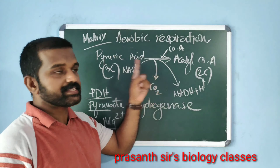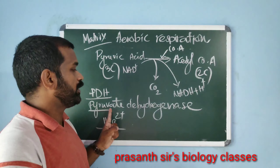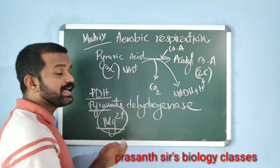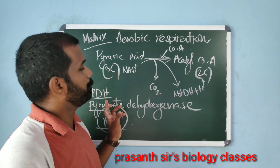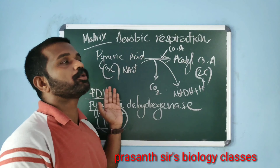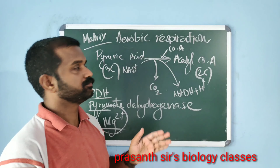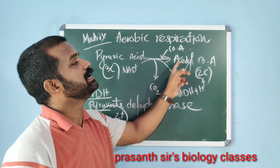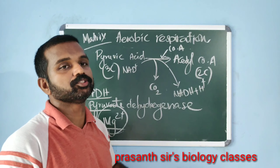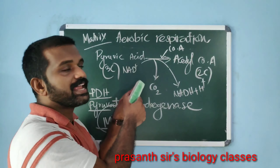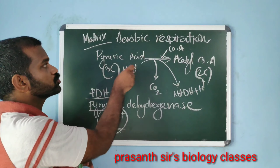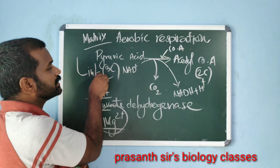This reaction is catalyzed by the enzyme PDH, that is pyruvate dehydrogenase. Mg²⁺ acts as the activator of PDH. Since this reaction links the two processes in aerobic respiration — pyruvic acid is the end product of glycolysis and acetyl coenzyme A readily enters the next cyclic pathway, that is the Krebs cycle — this is also known as the link reaction.